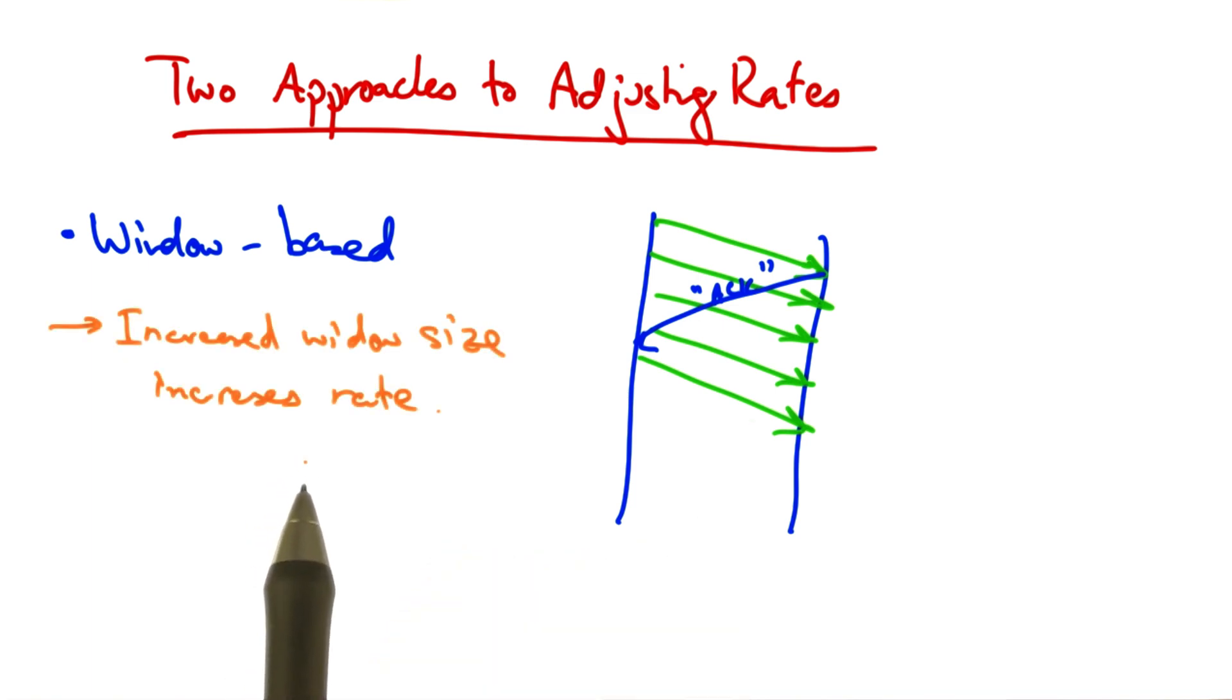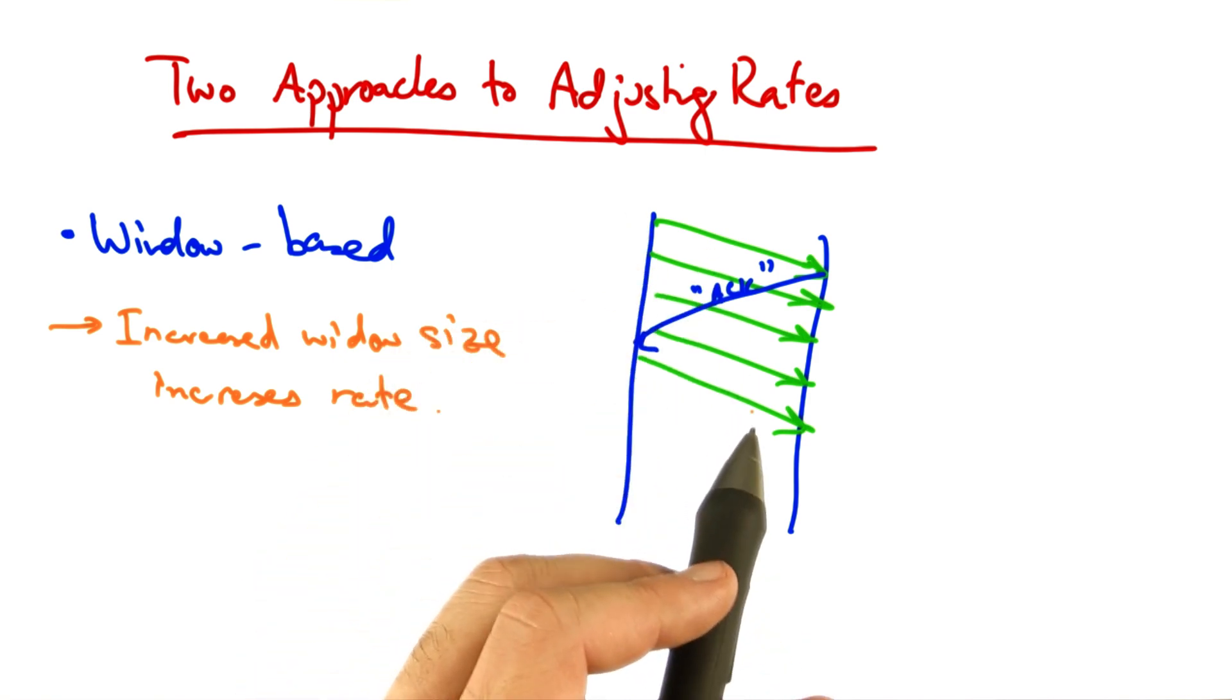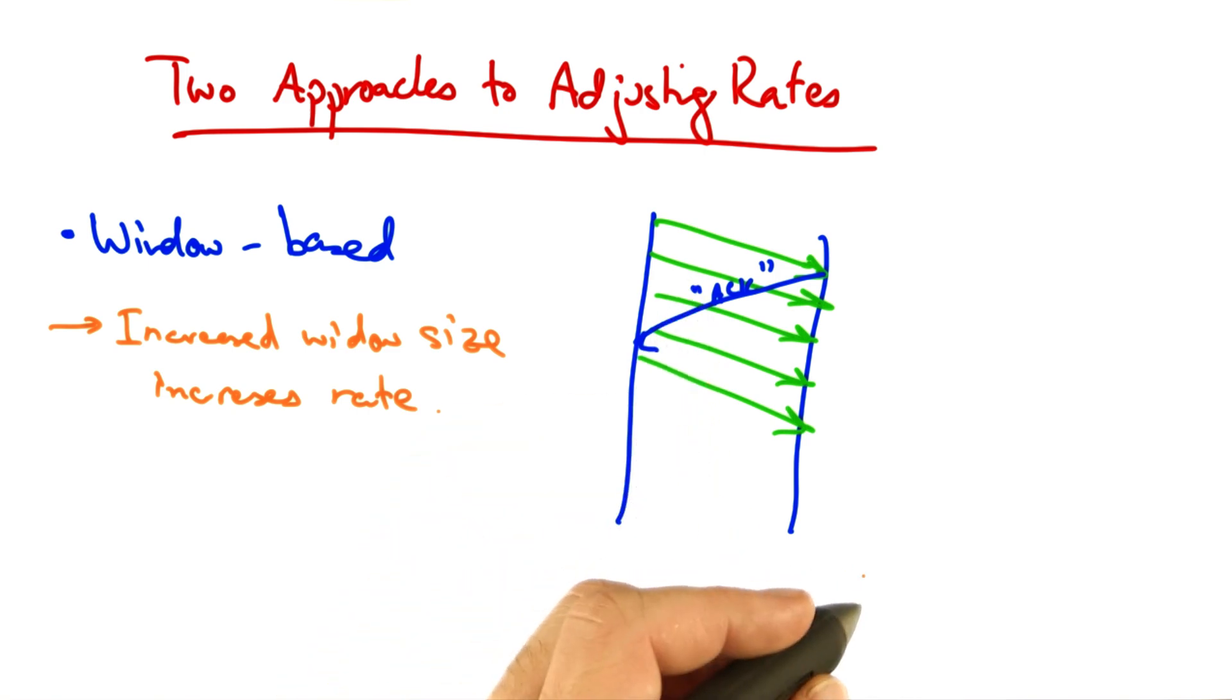In this case, if a sender wants to increase the rate at which it's sending, it simply needs to increase the window size. So for example, if the sender wants to send at a faster rate, it can increase the window size from four to five.